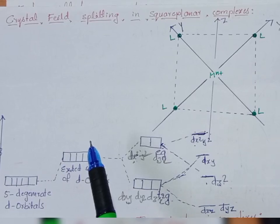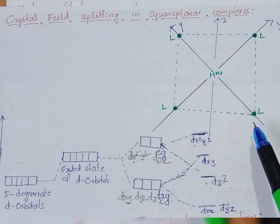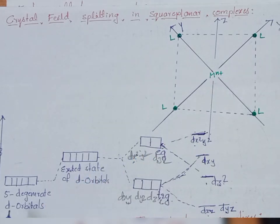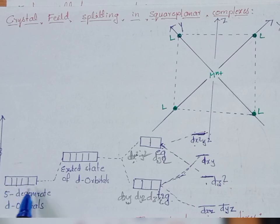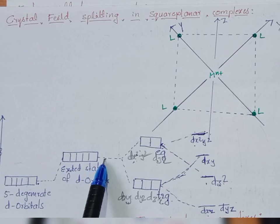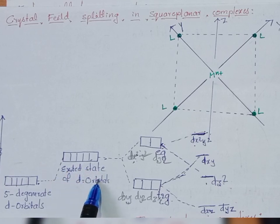Dear students, today I am going to discuss crystal field splitting in square planar geometry. In square planar complexes, the crystal field splitting of d-orbitals is like this. When the metal is in free state, all the 5 d-orbitals are in degenerate state. When the metal is put in the ligand solution, it will get the excited state, as I said in my previous video. This excited state of the 5 d-orbitals is a purely hypothetical state.